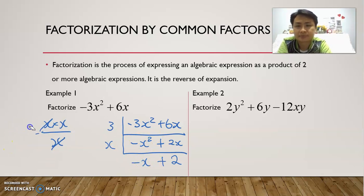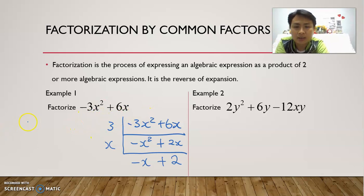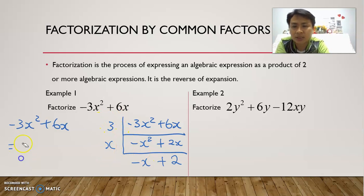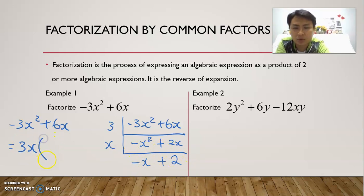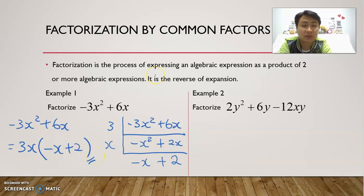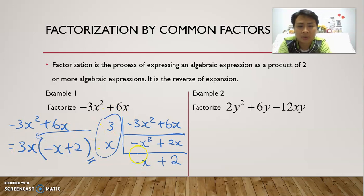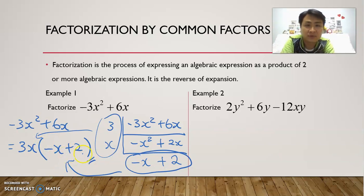So for this question, our final answer: negative 3x squared plus 6x equals — we multiply the two factors we took out, 3 times x gives 3x, and then the remaining bracket is negative x plus 2. So the answer is 3x times open bracket negative x plus 2. When we factorize by common factors, we take out the common factors and place what remains in the bracket.